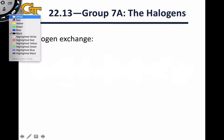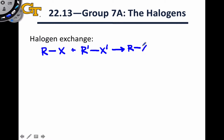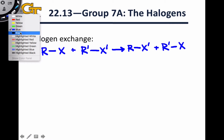The third reaction type is known as halogen exchange, and it is pretty much exactly what it sounds like. We start with two species containing two different halogen atoms attached to two different groups — these may be covalent or ionic. In the products, X and X′, the two different halogen atoms, have simply changed places. Examples of this process may involve two covalent compounds, two ionic compounds, or one covalent and one ionic compound.